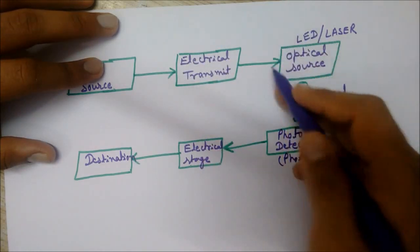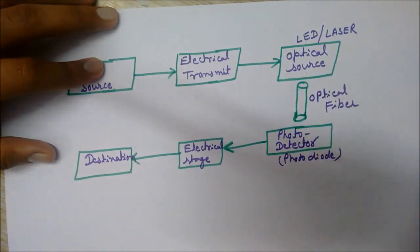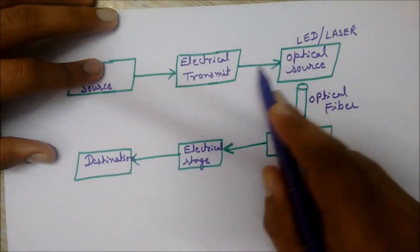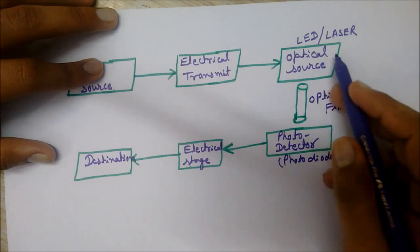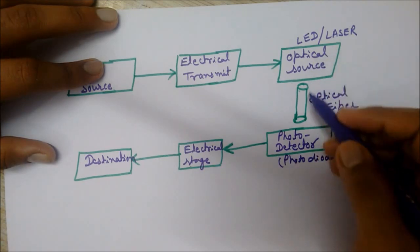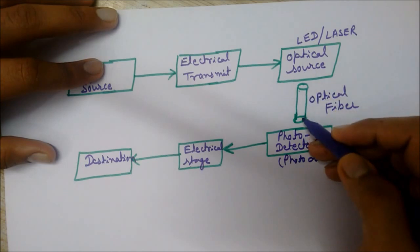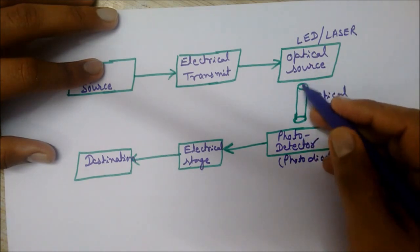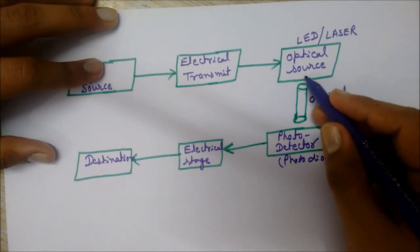Then with the help of an optical source, as the optical source emits light and takes the electrical signal as input, it converts these electrical signals into optical signals or light signals. Through this optical fiber, the light signal is carried to the receiving end. In this optical fiber, no electricity travels, only the light rays propagate through total internal reflection.